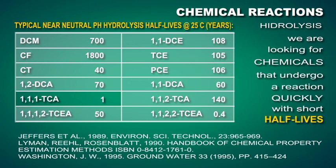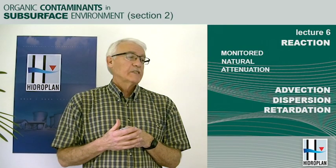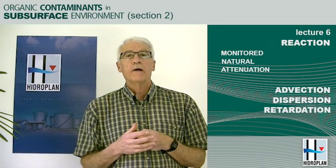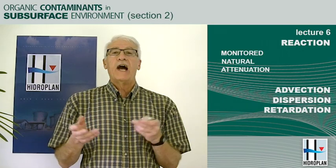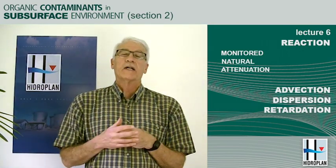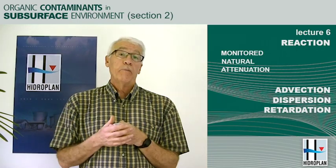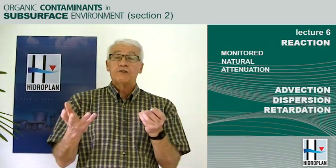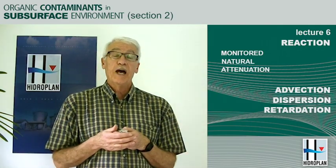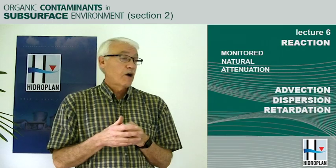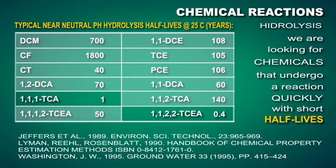A chemical that could undergo hydrolysis, and certainly 1,1,2,2-tetrachloroethane, can do so. Unfortunately, tetrachloroethane is not a common product in our industrial society, so we don't encounter it in the subsurface — not because it reacts quickly, but because it is really not used very much. In terms of groundwater environmental protection, perhaps it would be interesting to introduce that chemical instead of more persistent chemicals, but that's really not our call. Certainly 1,1,1,2-tetrachloroethane undergoes hydrolysis and that reaction should be anticipated at every site that contains that chemical.